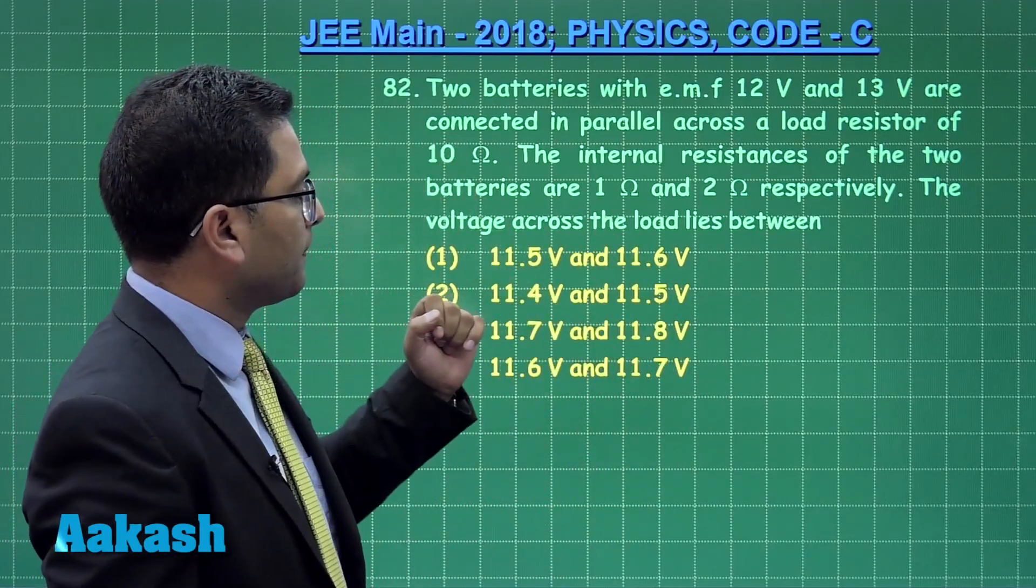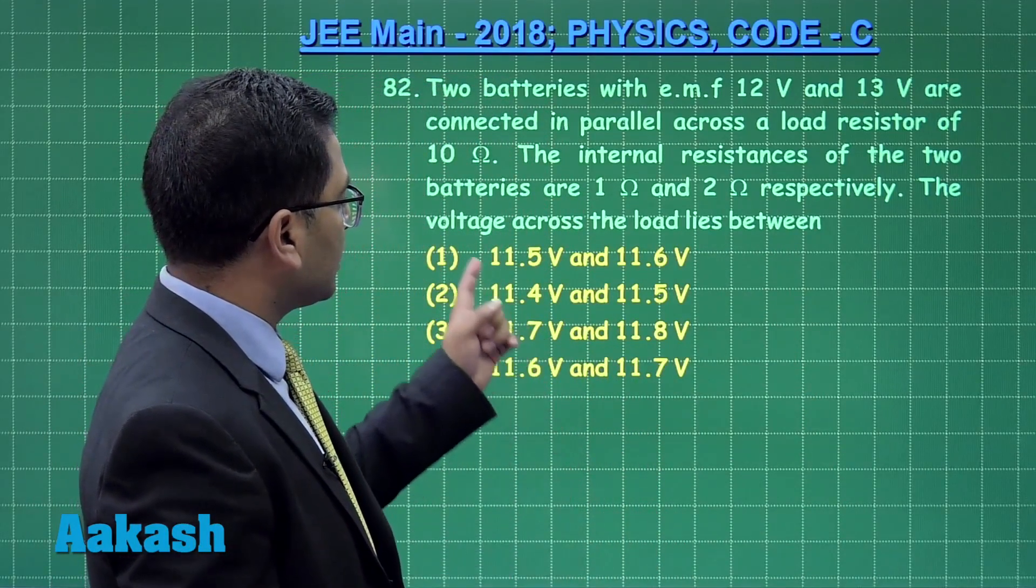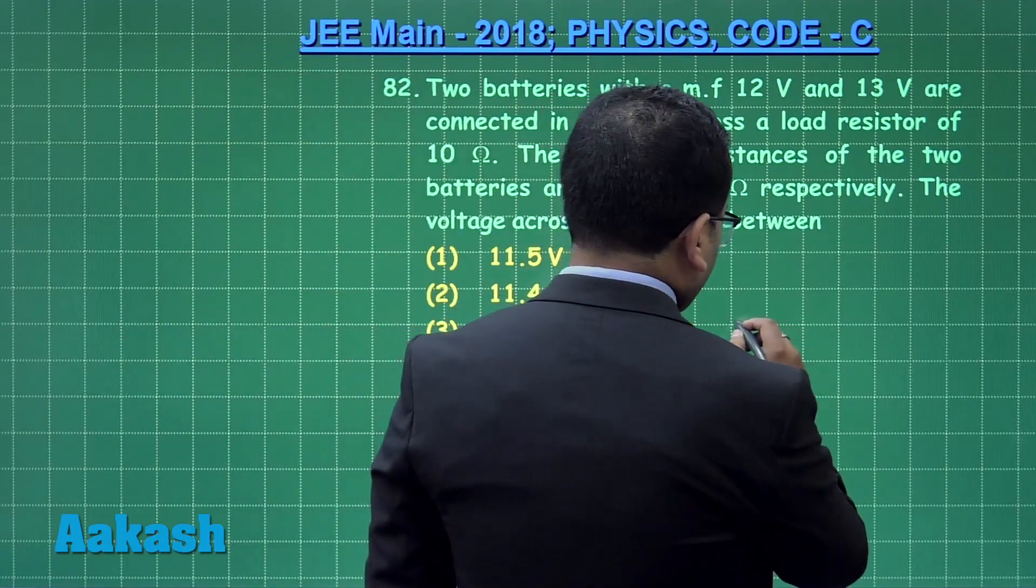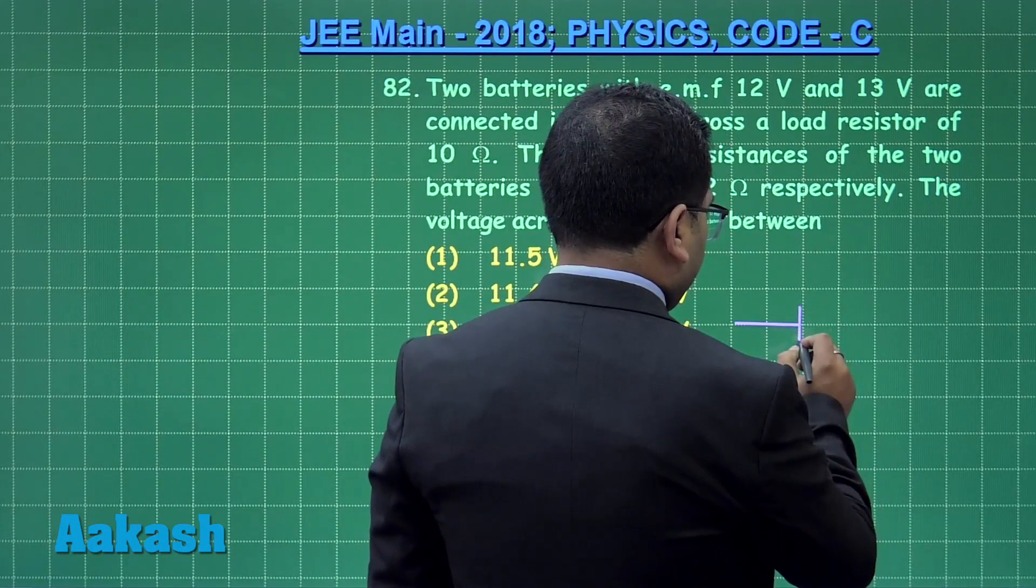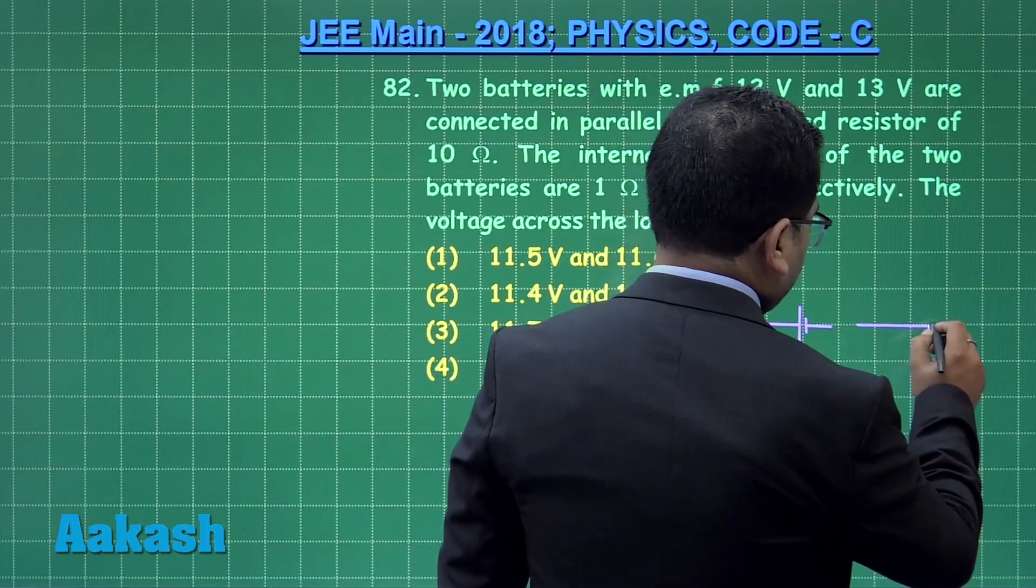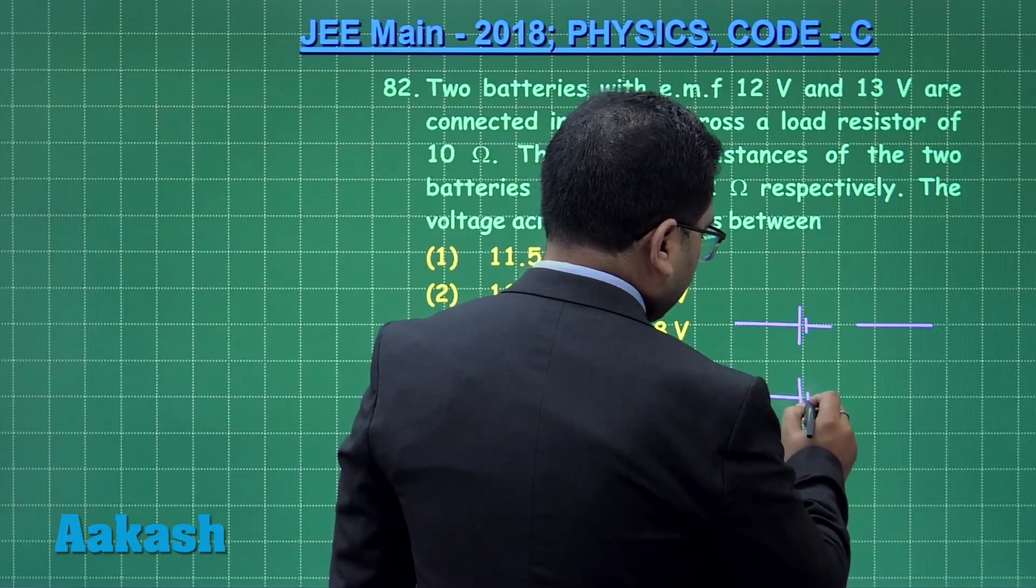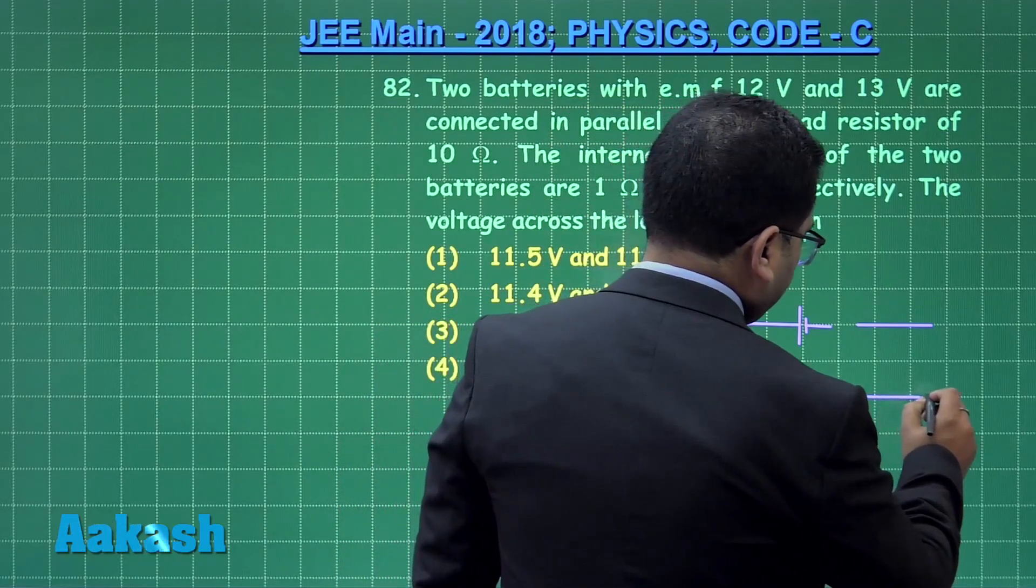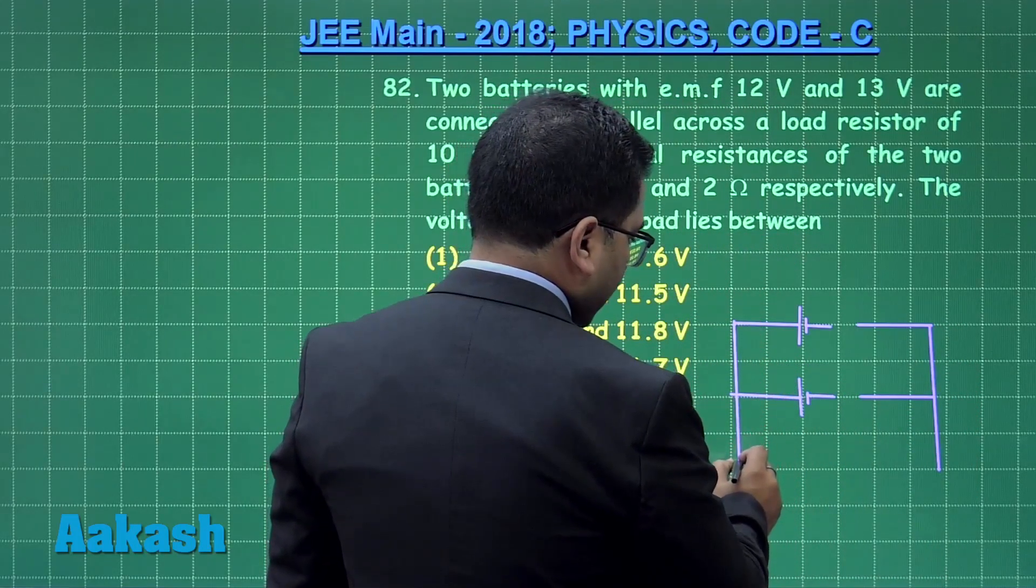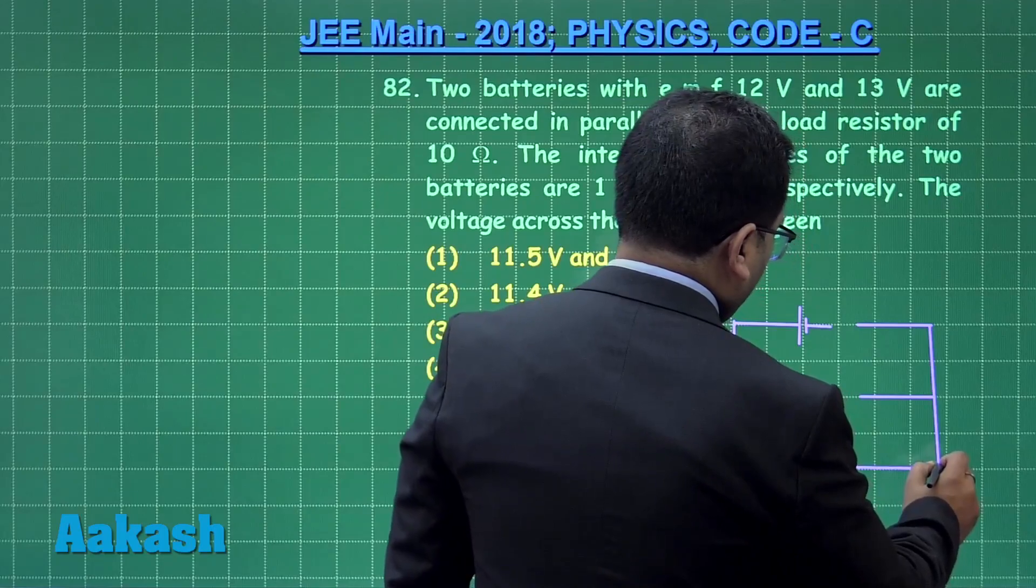So the question says there are two batteries of 12 volt and 13 volt and they are connected in parallel across a resistor which is termed as the load resistor of 10 ohm. The internal resistances of the batteries are 1 ohm and 2 ohm respectively, and we need to calculate the voltage across the load. We need to find the range. Okay, so this is again a straightforward formula-based question. Here let me make the batteries here with the internal resistance which I will be fitting it here. Another battery is there and this is the polarity.